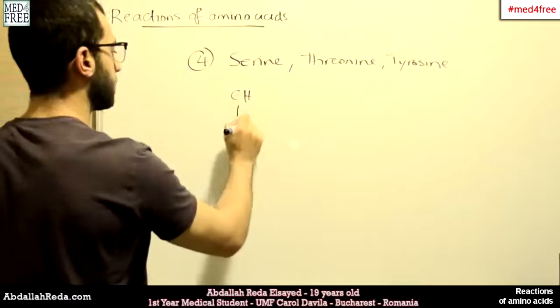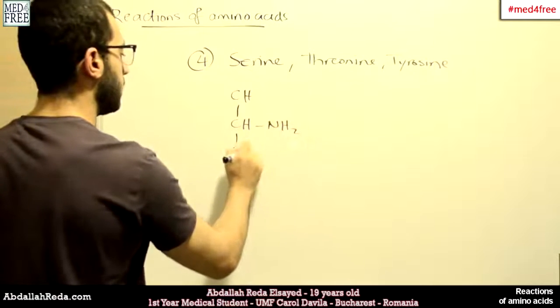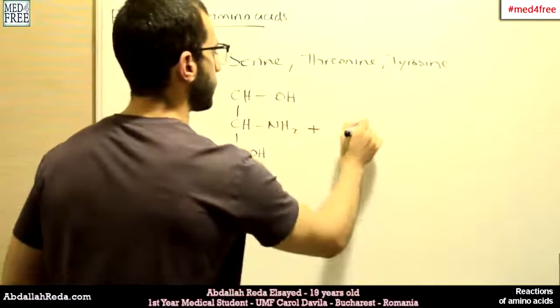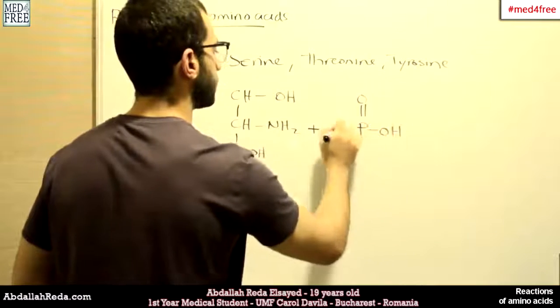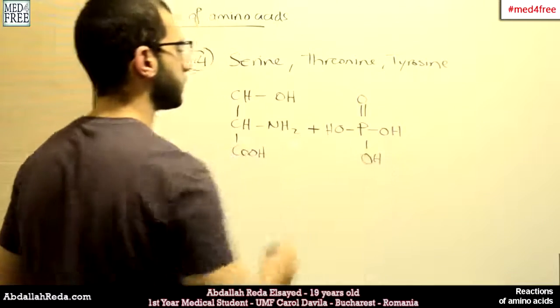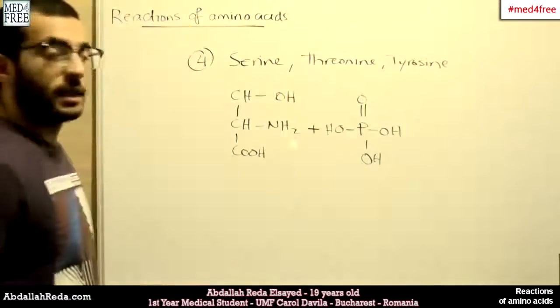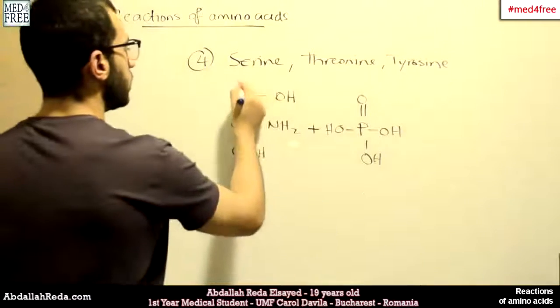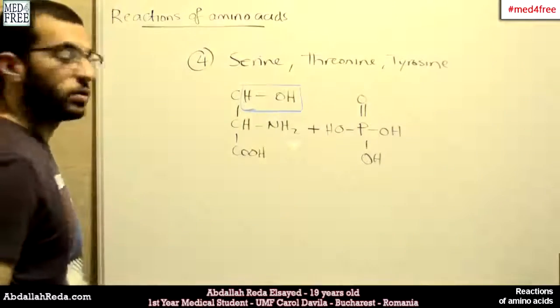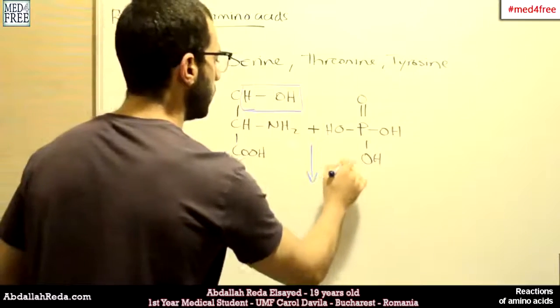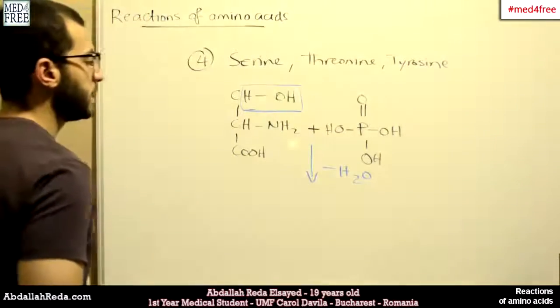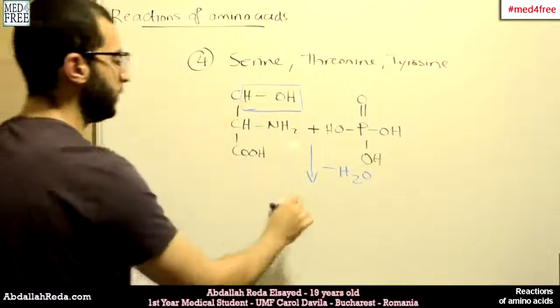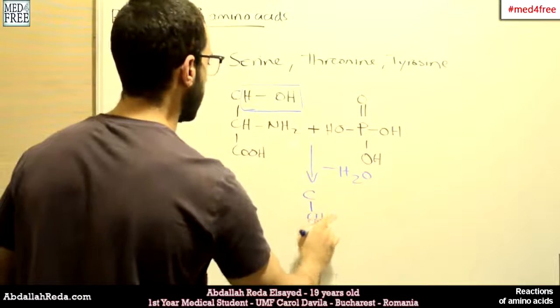So again, we write the structure. And here we have the phosphoric acid. What happens is that we lose this H2O, so we lose a water molecule. And the phosphoric group will be added on this carbon, so we will have the structure like this.